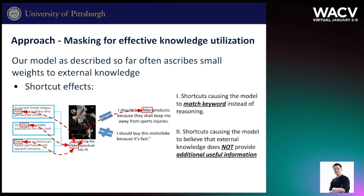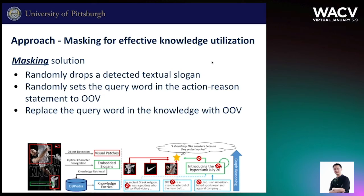We observe that our model often ascribes small weights to external knowledge, so we summarize two types of shortcuts. First, since some keywords appear in both human-written statements and embedded slogans, models can use such shortcuts to match keywords instead of reasoning. Second, keywords in the retrieved knowledge text cause the model to believe that external knowledge does not provide additional useful information. We propose a masking solution: we randomly drop out a detected textual slogan, randomly set the query word in the statement to an out-of-vocabulary token, and replace the query word in the knowledge with an out-of-vocabulary token.